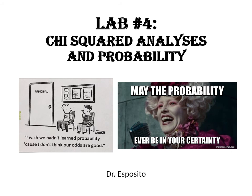Hi everyone, and welcome to our lab number four. Today we're going to focus on chi-squared analyses and probability, which means yes, you have to see numbers and math. I know students hate that, but today's lesson is very valuable. It sounds very complicated when you see it in textbooks or hear it elsewhere, but I'm going to try and break it down into a few easy steps for you, and you'll be able to do a lot with these formulas and information.